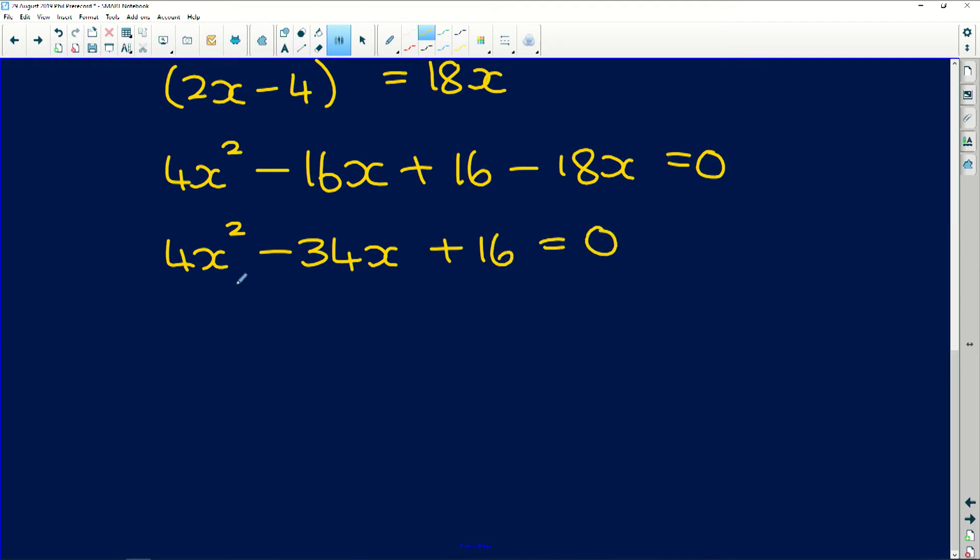So 4x squared minus 16 minus 18 is minus 34x plus 8 equals 0. So now it makes it so much simpler if we divide all of this by 2. So we get 2x squared minus 17x plus 8 is equal to 0. So now some of you guys might be able to find the factors of this and some of you might just want to plug it into the quadratic equation.